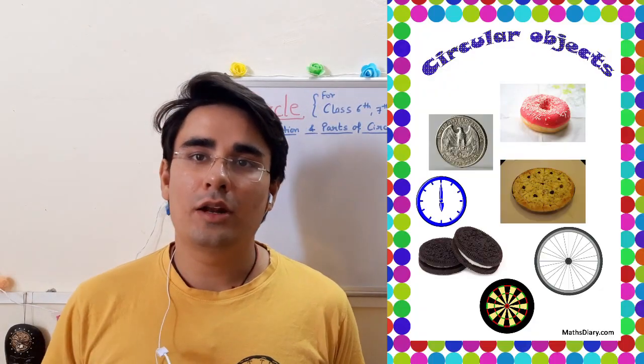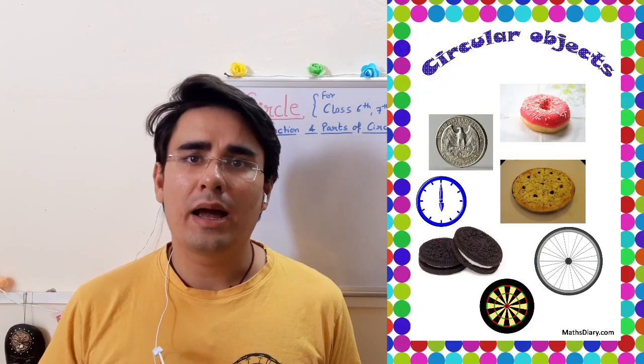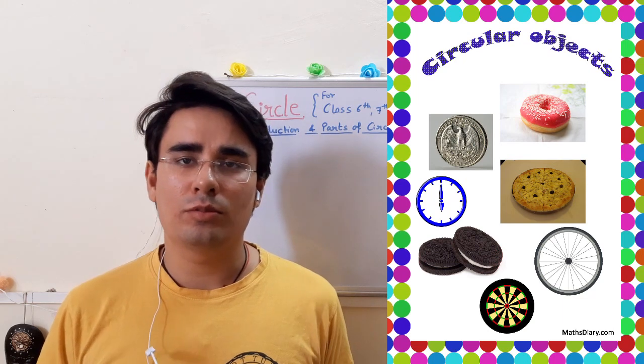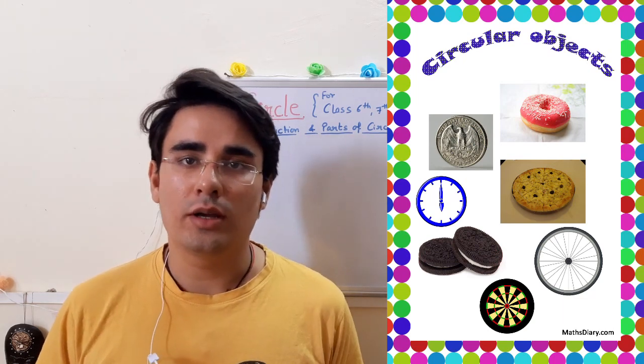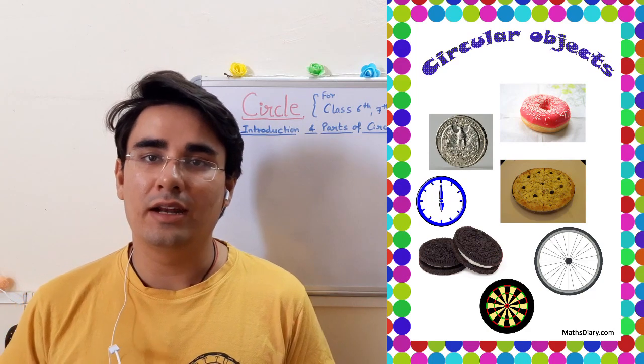In our environment, you see many round objects like wheel, bangle, coins and many more objects. This geometrical shape, circle, is very important for our daily life.